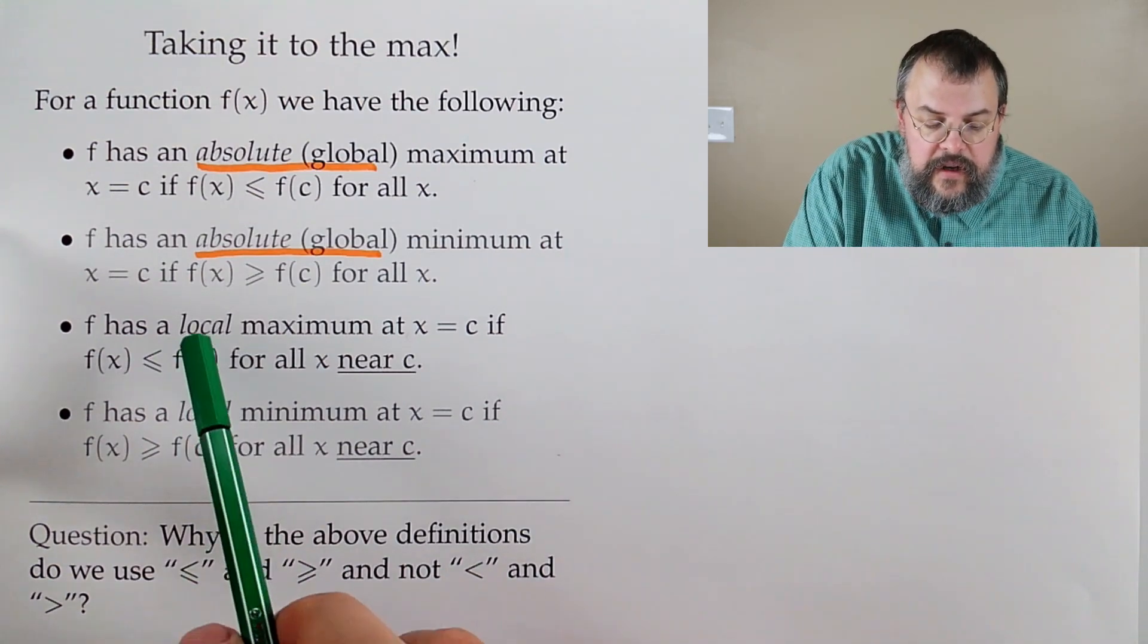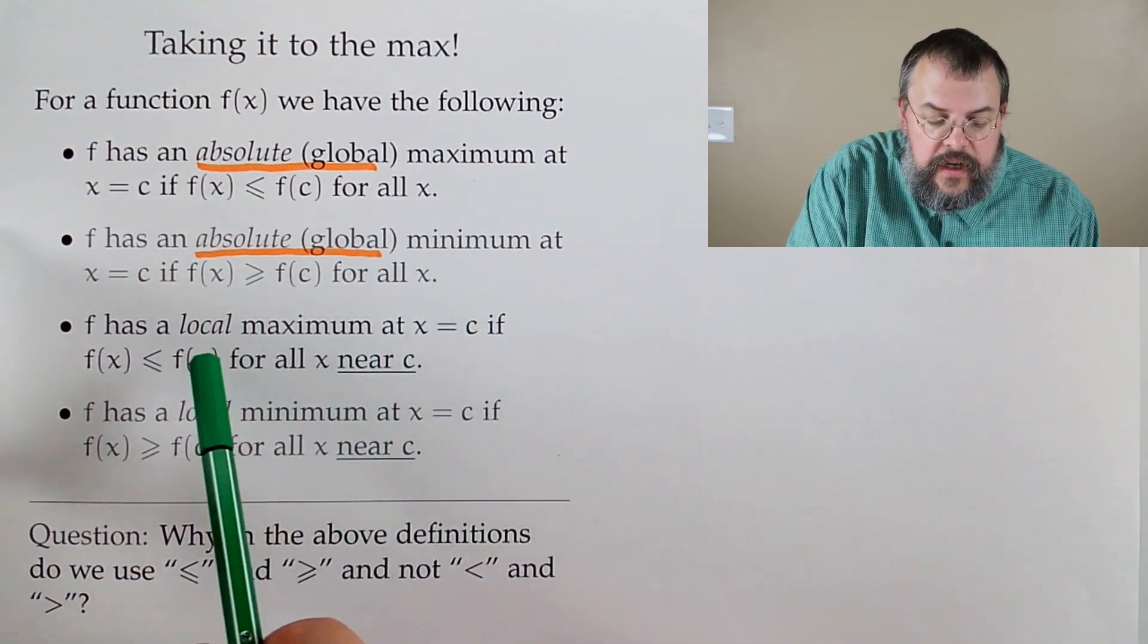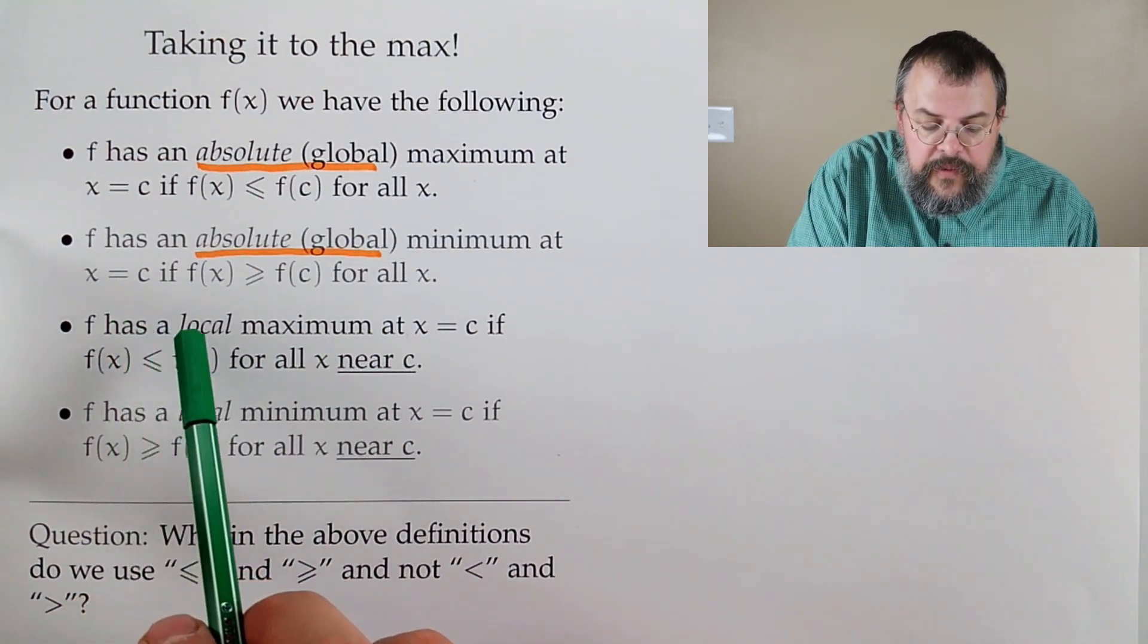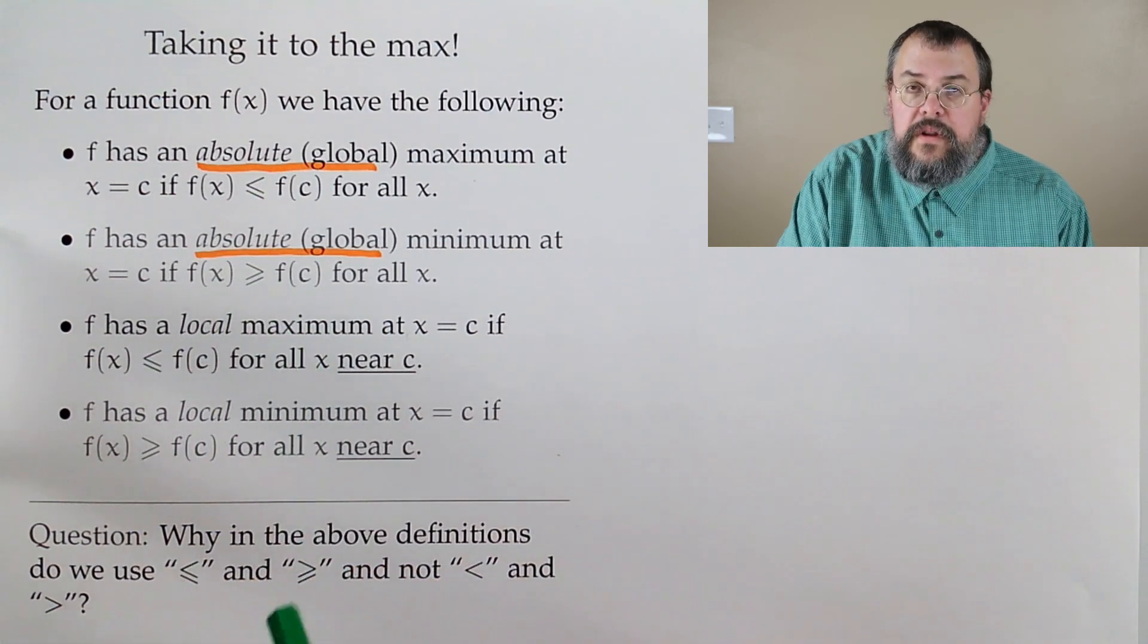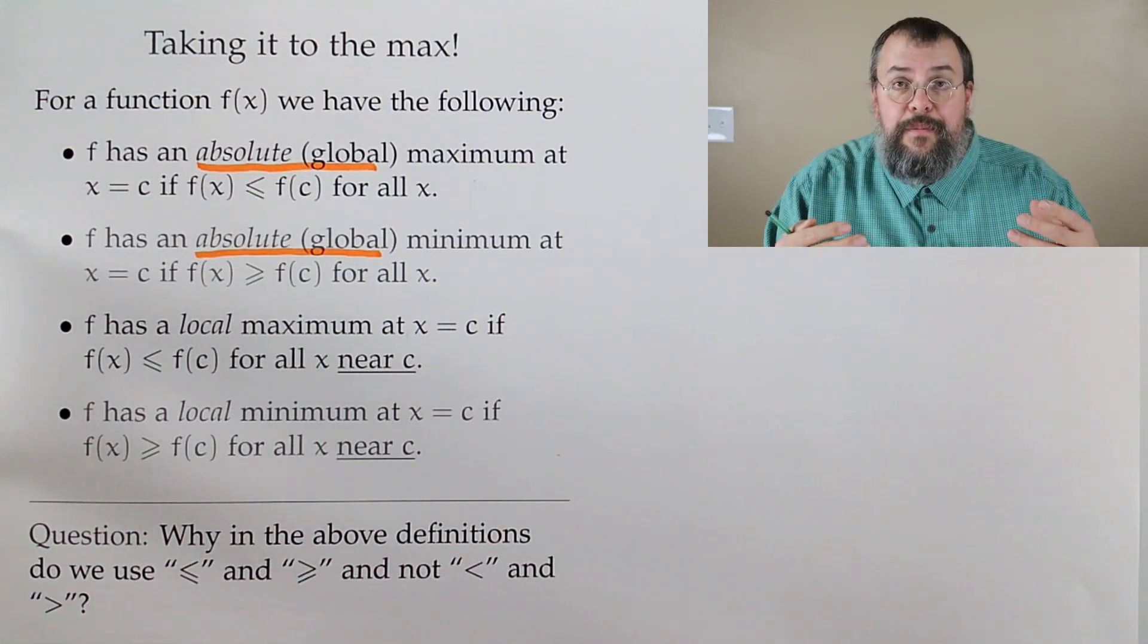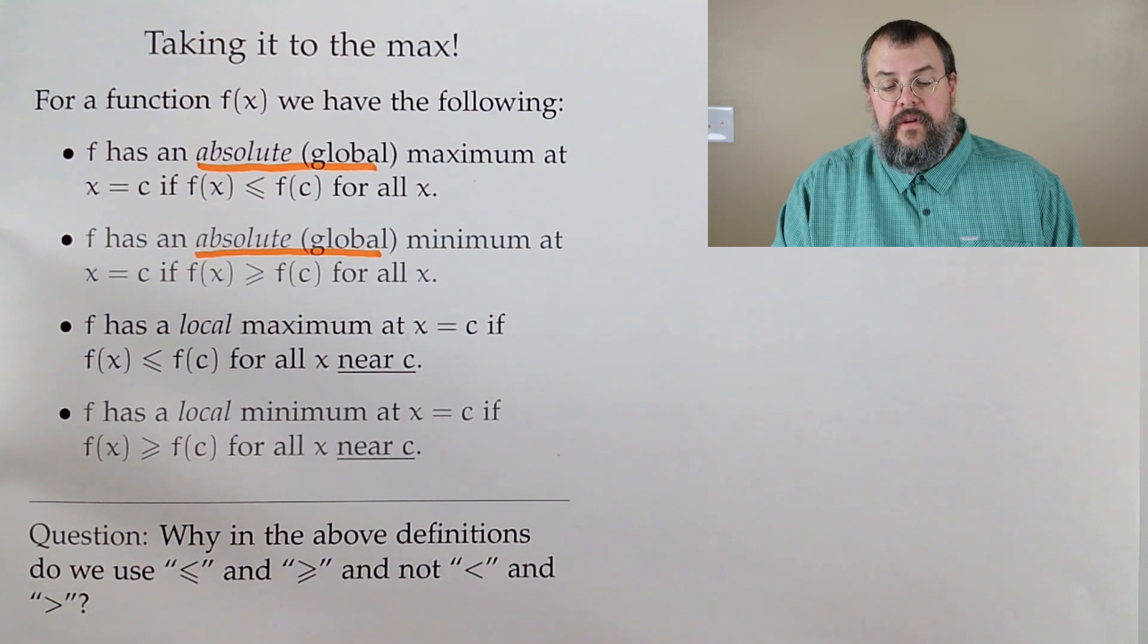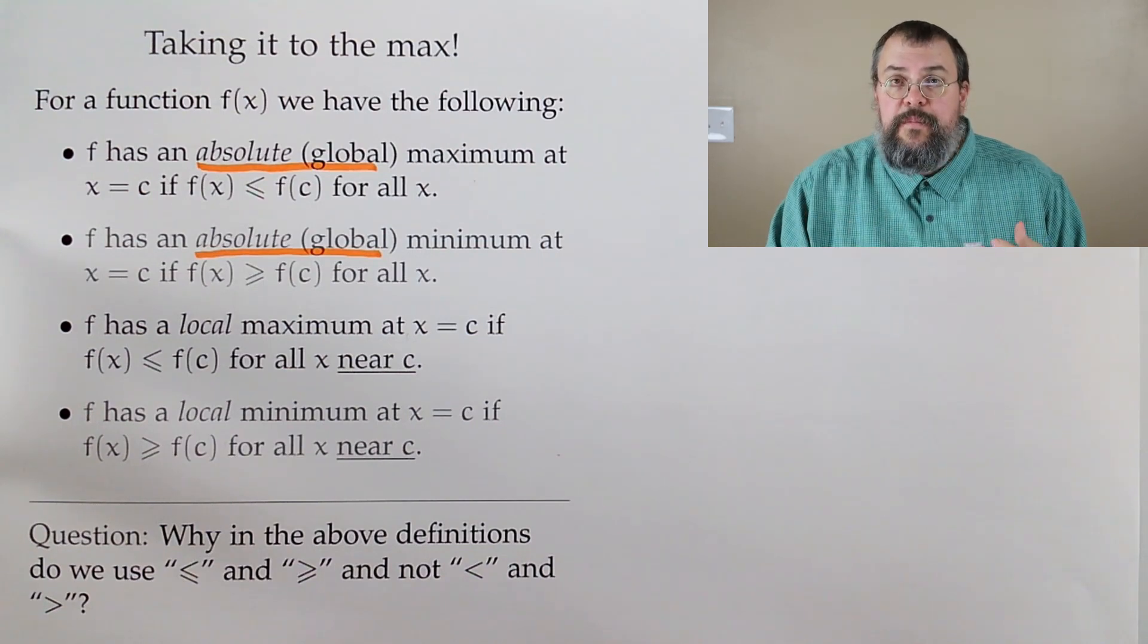Similar idea. You're an absolute minimum if at your point c, no matter what else you plug in, you can never go below what the value is at c. So c is the lowest output your function can produce. So those are the absolute ones.